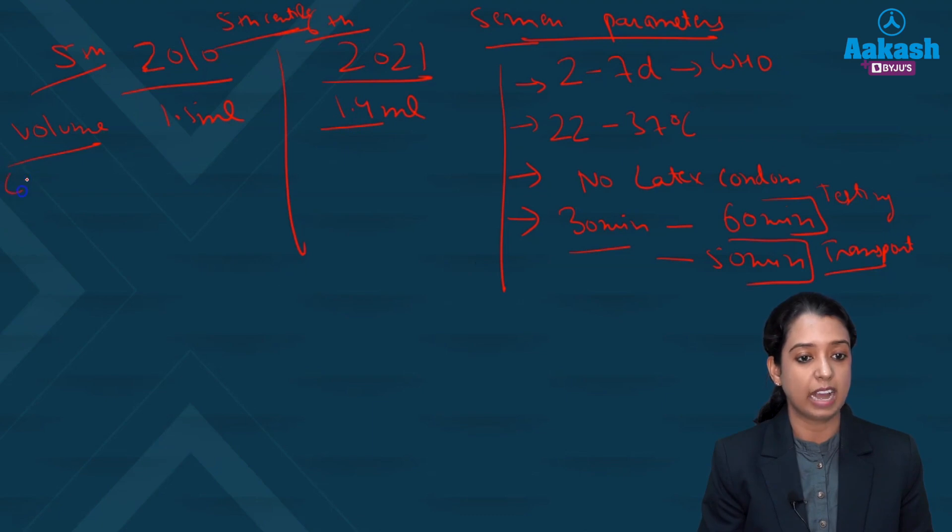And then the semen count previously 15 million per ml. But now in new one it is 16 million per ml. So this is just 1 million change but you have to remember the correct figure. Volume, count.